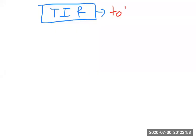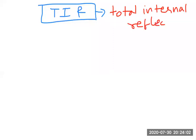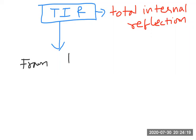TIR means Total Internal Reflection. Total Internal Reflection is possible only when the ray is traveling from denser to rarer medium. This is the first condition: the ray must travel from denser to rarer medium.